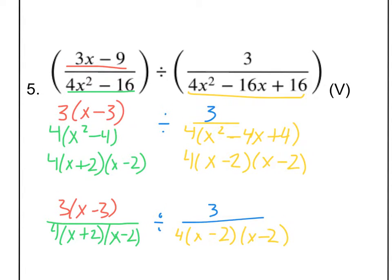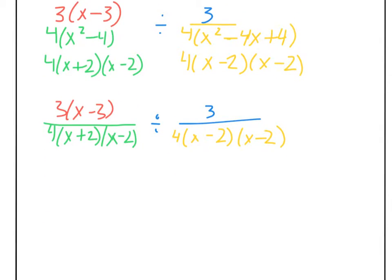Let's find some excluded values — those are based on the bottom. X plus 2 means X cannot equal negative 2, that would make the bottom 0. X minus 2 means X cannot equal 2, that would also make the bottom 0. You might notice those are the same two things on the right side, so we don't have to worry about that.